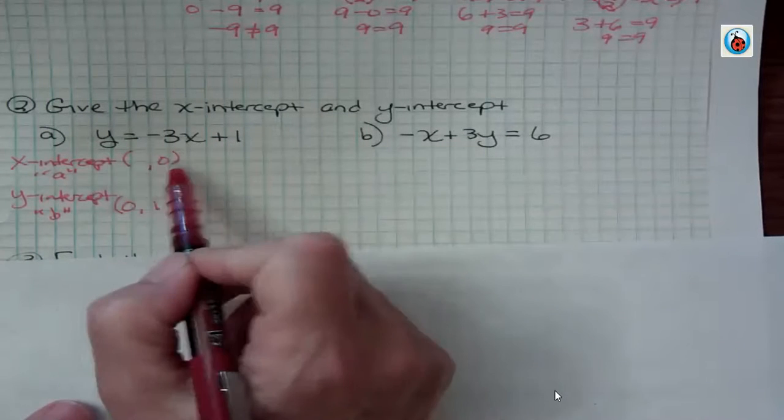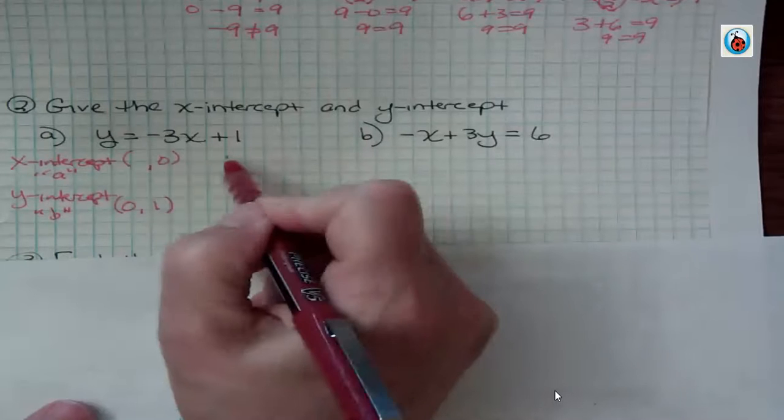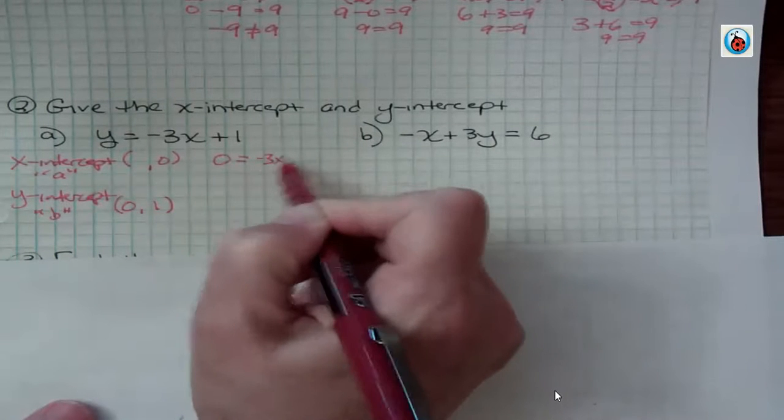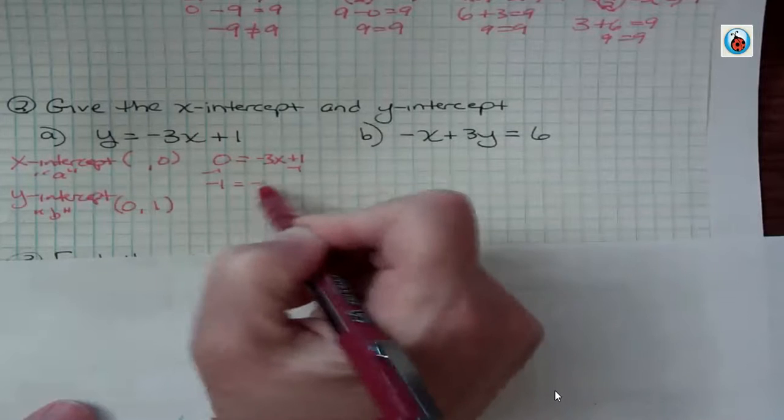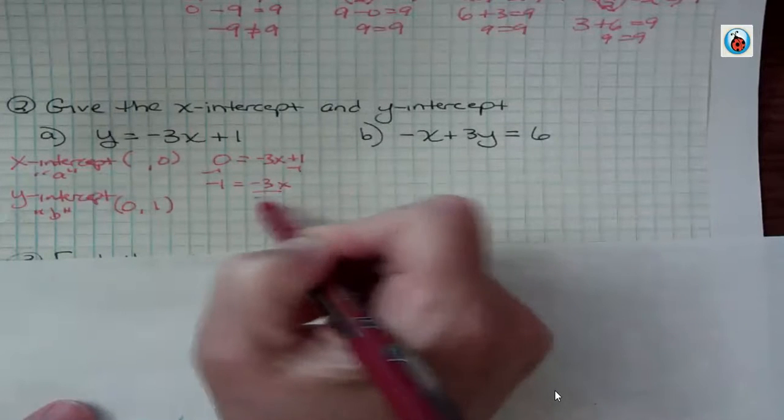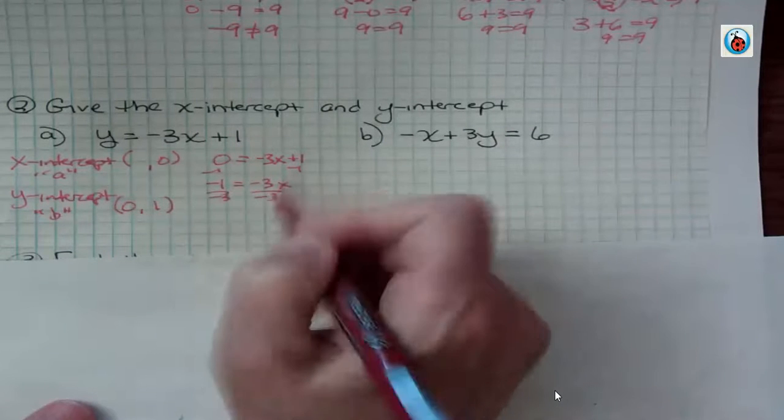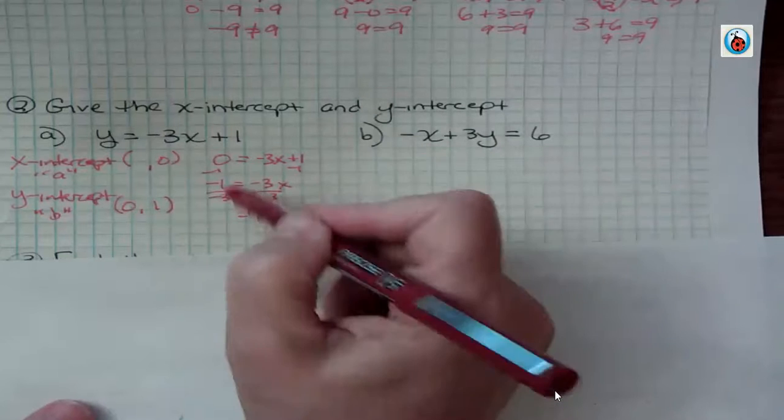For the x-intercept, though, we have to say, what if y is 0? And then we have to solve this equation. If I subtract 1 from both sides and then divide by negative 3, I find out that my x-intercept is actually 1 third.